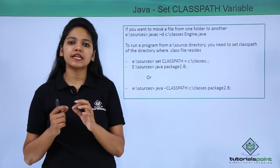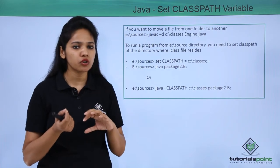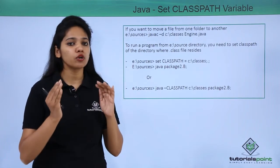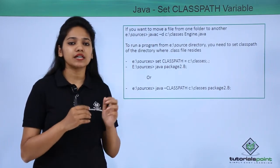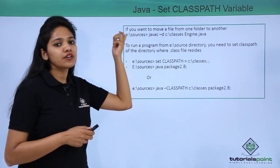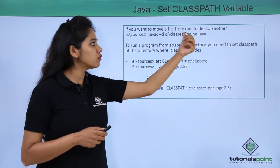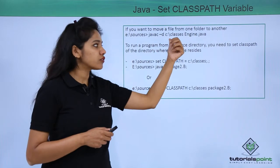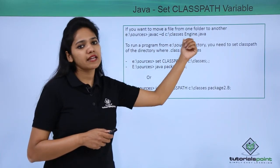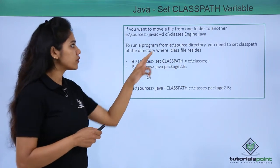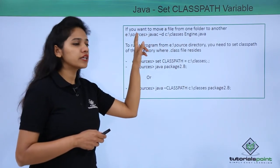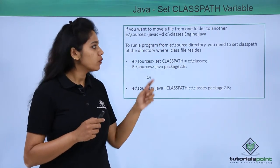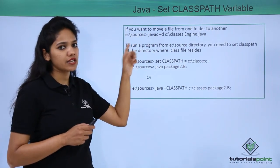Now you know how to store .class files and .java files separately. But if you want to copy or move a file from one folder to another — for example, from an E drive 'sources' folder to a C drive 'classes' folder — how do you do that? You use the keyword 'javac -d' to move or compile a file such as Engine.java from one location to another.